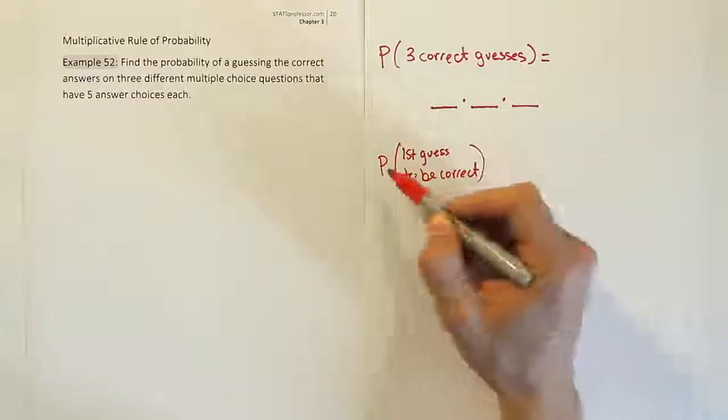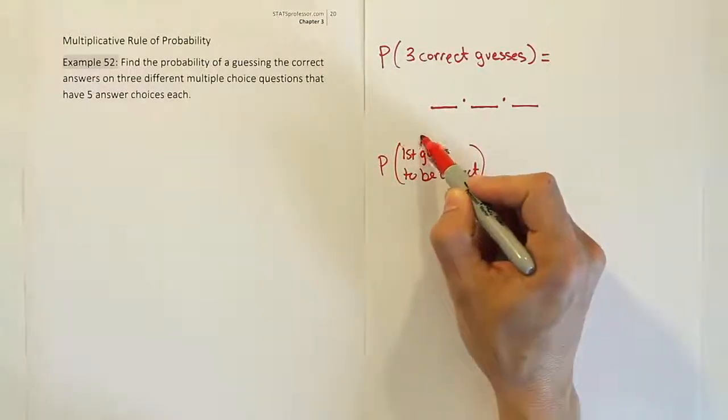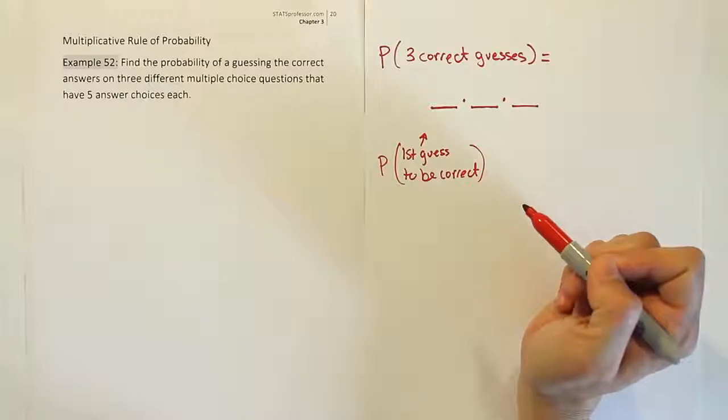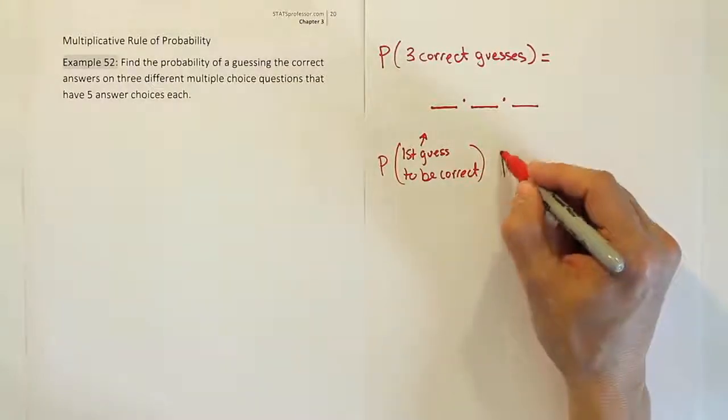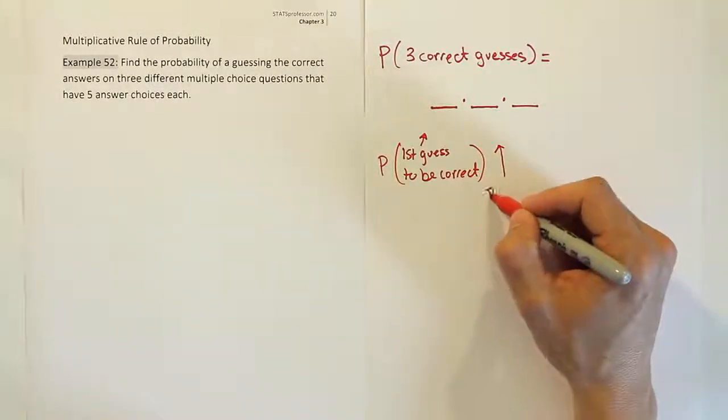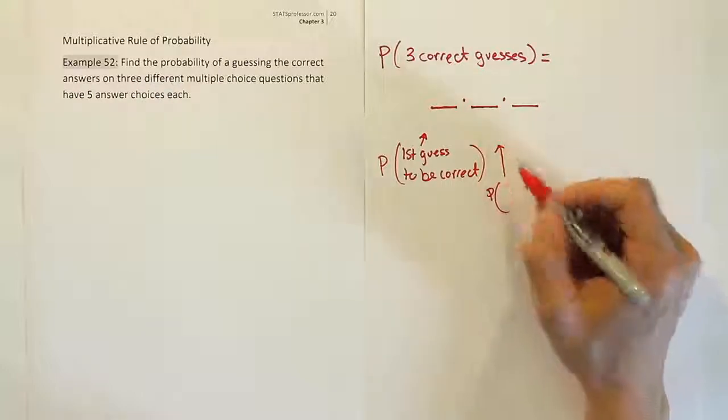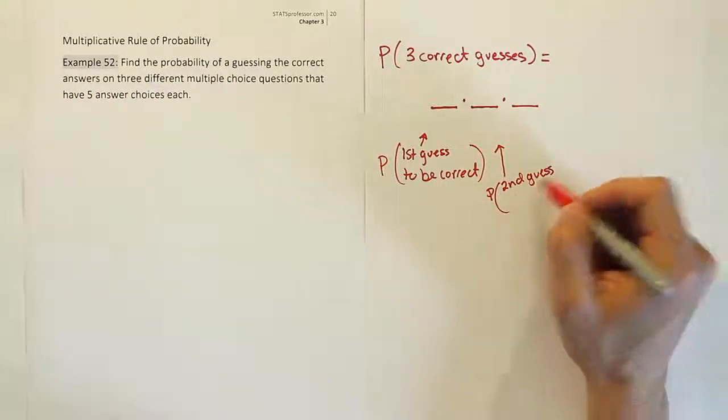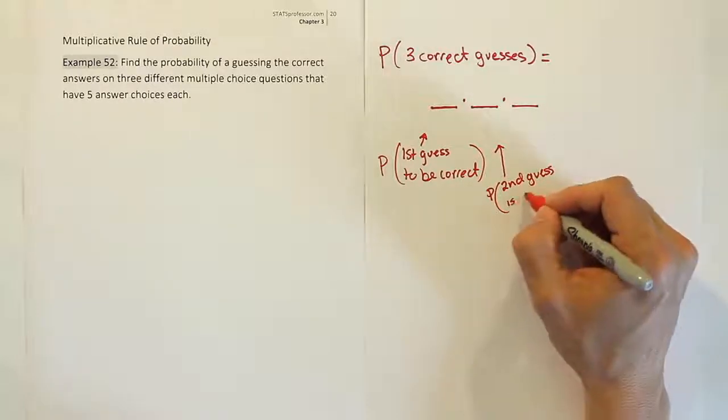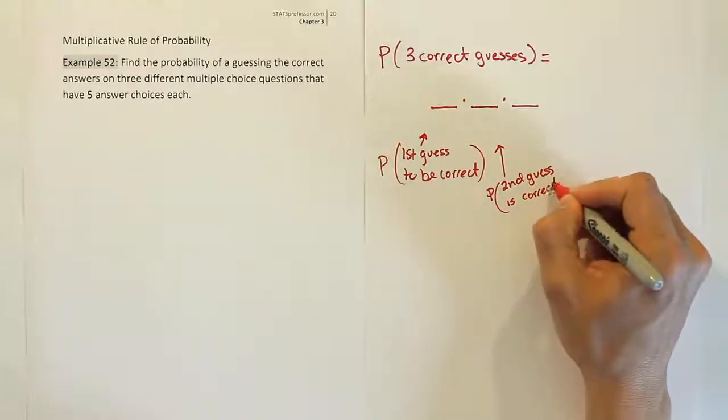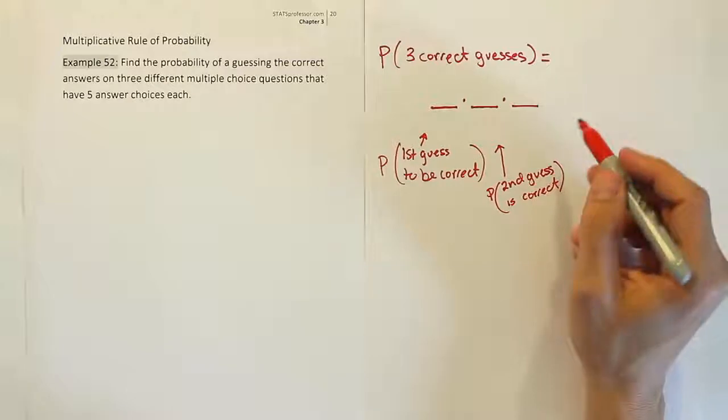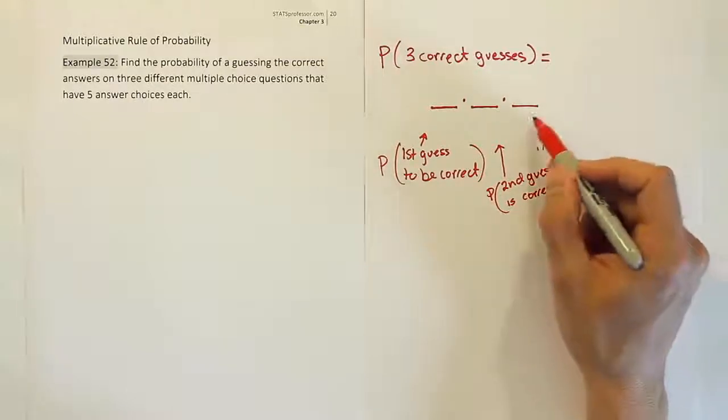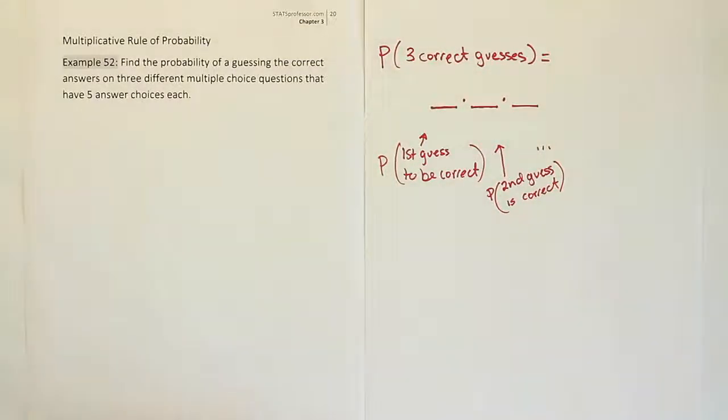It says all three are correct. So what that first space becomes is the probability the first guess is correct. And then what do you think the second space will represent? Well, that would be a probability as well. And that second space is for the second guess. And again, it's the probability the second guess is correct. And then so on and so forth. The last space is the same, but it's for the third guess. Alright, so now that you know what that is, the next thing to do is to figure out how to state this simple fraction.